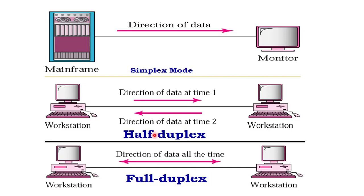Next is half duplex. In half duplex, both stations can transmit as well as receive data, but not at the same time. If one device wants to send data, the second device receives it; if the second device wants to send data, the first device receives it — but both devices cannot send and receive data simultaneously. The example of half duplex is walkie-talkie.